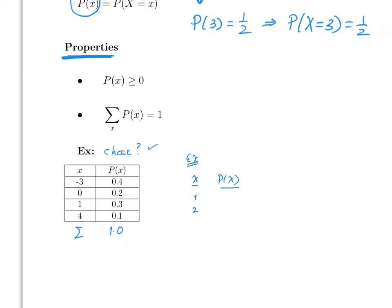On the homework, you may have questions like this: for which value of k is this a random variable? Well, clearly everything has to add to 1, so 4k must equal 1, which means k equals one-fourth. In the same way, if I ask for which value of t is this a random variable, the missing value is 0.2, so t equals 0.2.